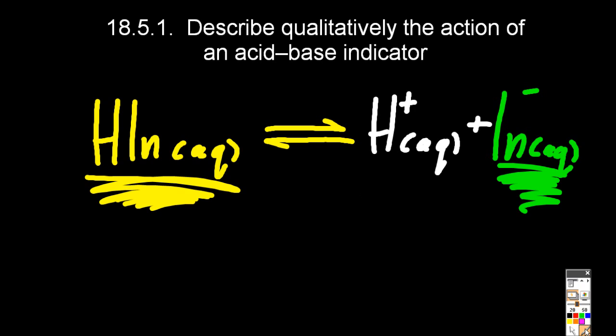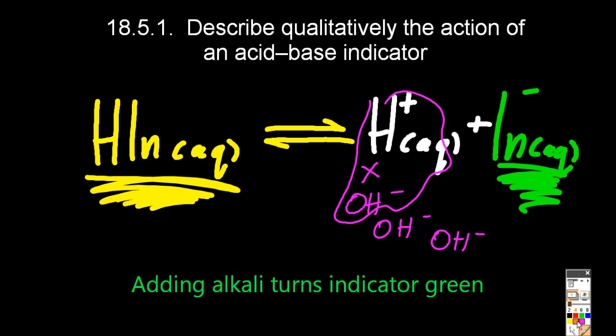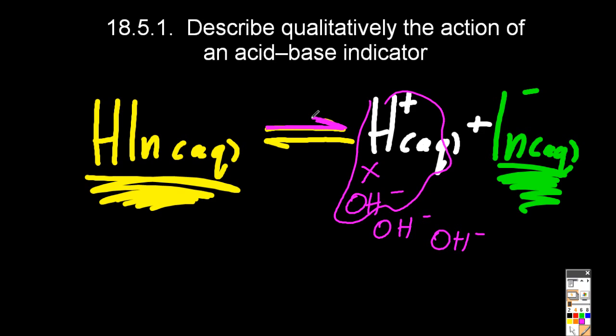Conversely, if I add OH-, that will react with the H+. OH- reacts with H+ to form water, effectively lowering the concentration of H+, and causing the equilibrium to shift to the right to replace the H+. And as it shifts to the right to replace the H+, the yellow colour will decrease and the green colour will increase.